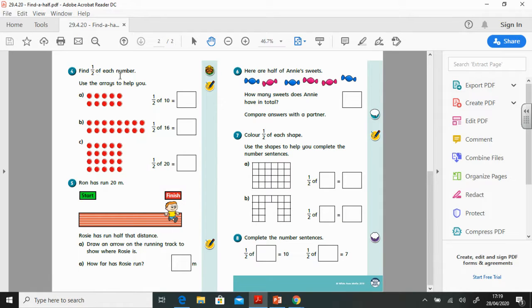Have a go at questions four and five on the second page. Find half of each number, use arrays to help you. And question five, Ron has run 20 meters and you need to find, you need to work out the answers for A and B.